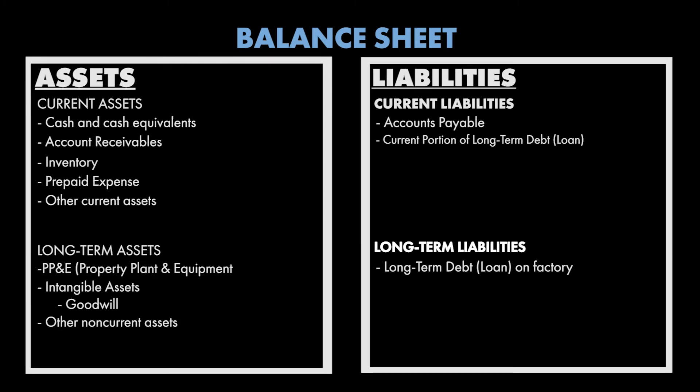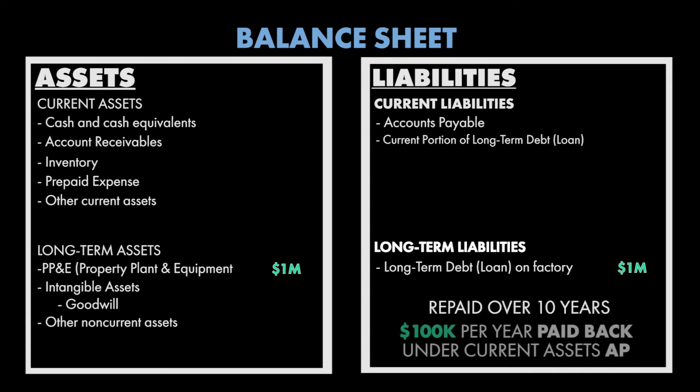That'll actually be a current asset. Let's do a very quick, easy math example. Let's say it's going to cost you a million dollar loan to build your factory and it's going to get repaid over 10 years — so a hundred thousand dollars per year.